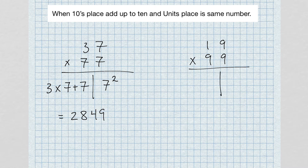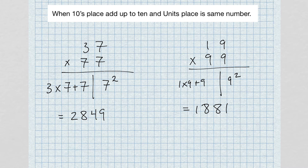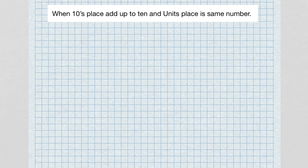Now 19 times 99: left-hand side, one times nine plus nine; right-hand side, nine squared. One times nine is 9; 9 plus 9 gives us 18. Nine squared is 81. So our answer is 1881 — you get your answer very fast using this method.